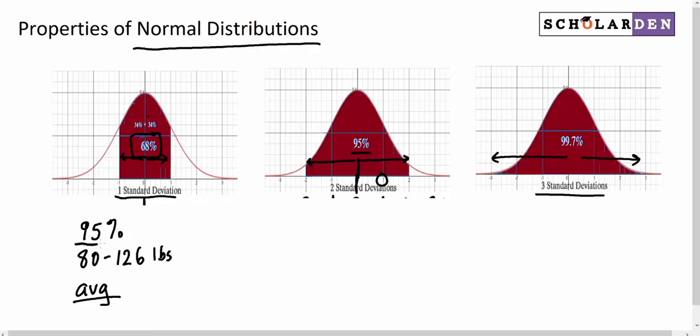So if it's a normal distribution and we're told 95% of the values are between two points, we know those two points have to be right here and right here. In other words, two standard deviations above and two standard deviations below the mean. That's just how normal distributions behave. 95% of the data is between those two.